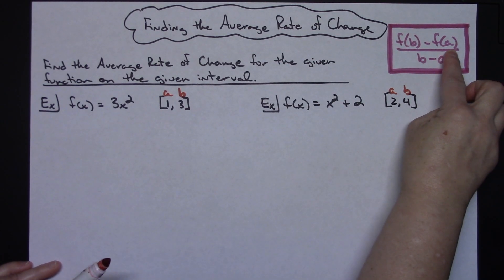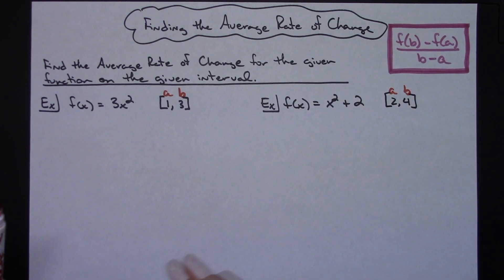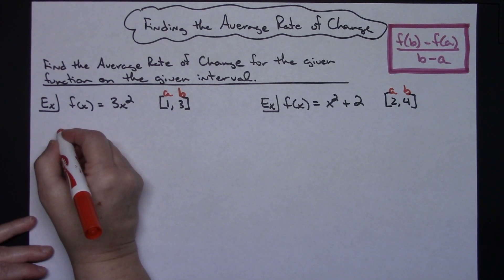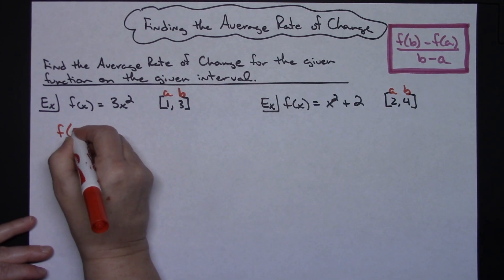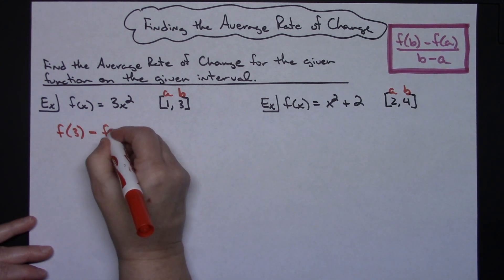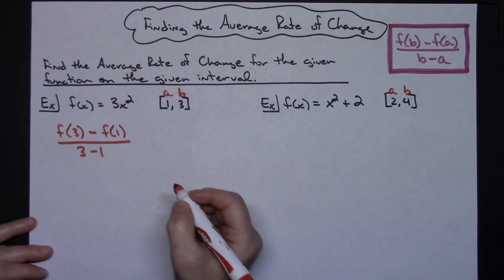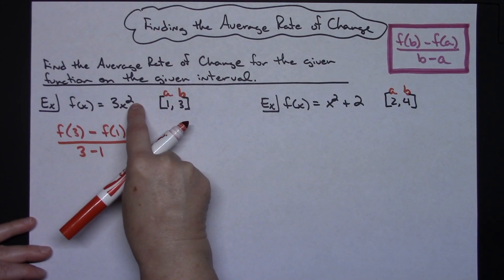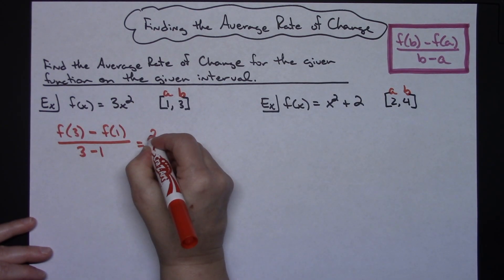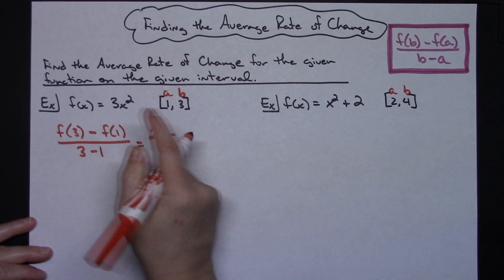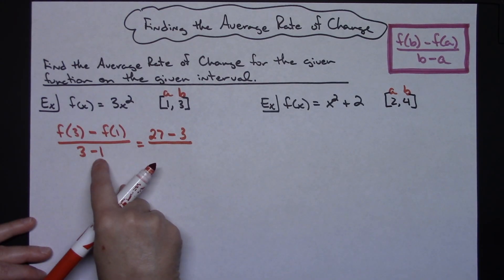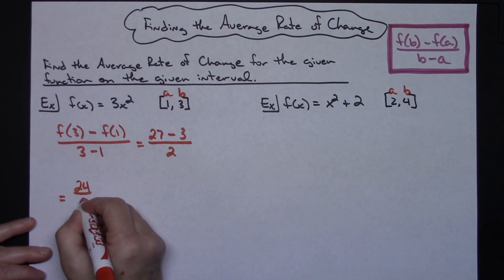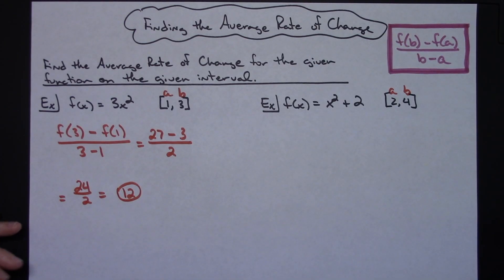The top is just function notation and B minus A is just B minus A on the bottom. So substituting, I have F of 3 minus F of 1, all over 3 minus 1. Plugging 3 into the function: 3 squared is 9, times 3 gives 27. Plugging 1 in: 1 squared times 3 gives 3. So that's 24 over 2, giving an average rate of change of 12.